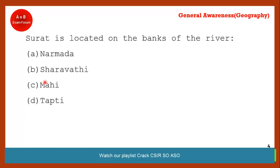Coming to the next question: Surat is located on the bank of which river? This question has come in the September 9 exam. Yes, you are right — it's option D, Tapti or Tappi river. Tapti is the old name; the current name is Tappi. So the correct answer is option D — Tappi.